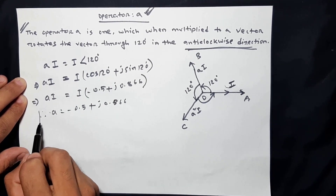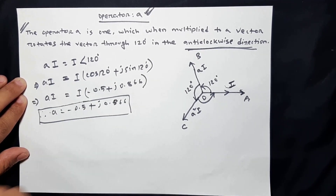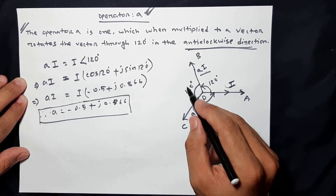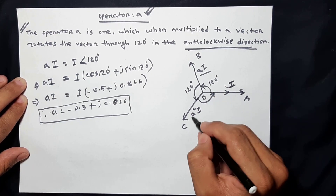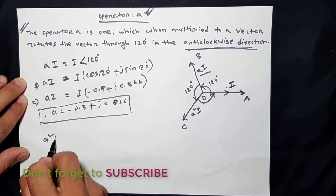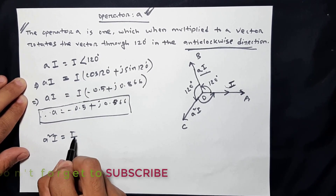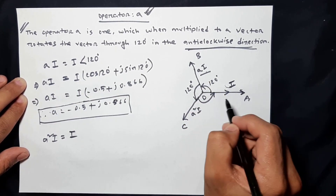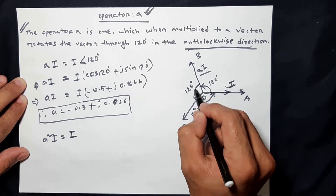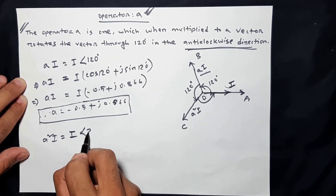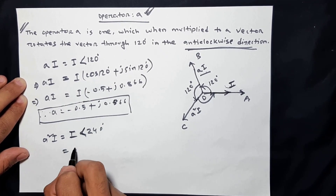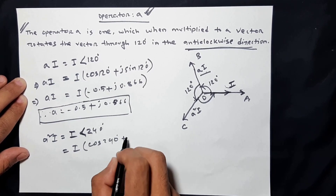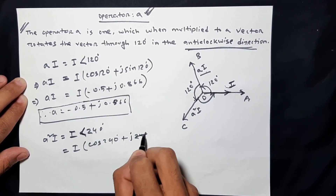Now, A squared: when we multiply A with A, we rotate 120 degrees anticlockwise twice, giving 240 degrees. So A squared is expressed as cos 240 degrees plus j sin 240 degrees.